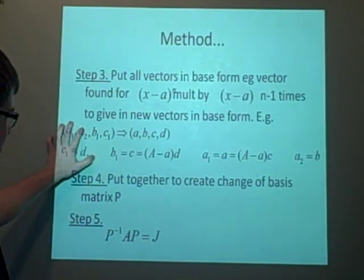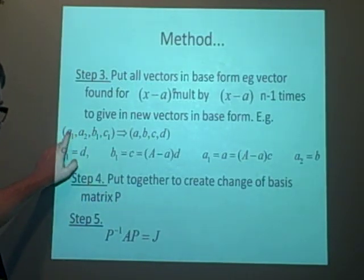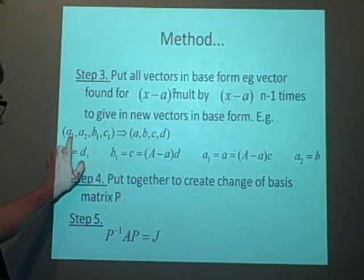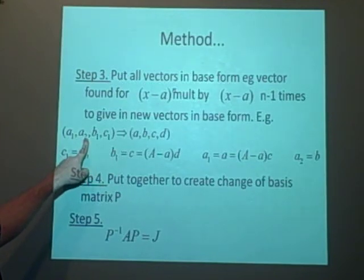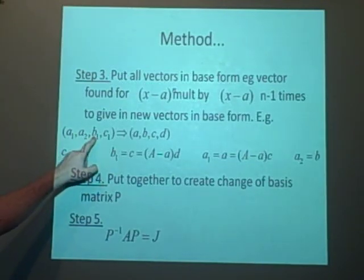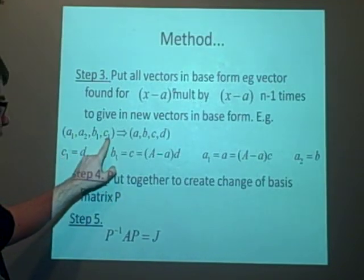And the only way I can describe this example here, if we've had, in this case it's going up to x-a to the power 3, because in the first one we found two vectors, a1 and a2. The second time around when we did x-a squared, we found another one called b1, and the next time we found one called c1.